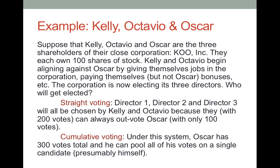If it's a close corporation — and this is not true of large publicly traded corporations — many states, including California, allow but do not require the bylaws to permit cumulative voting, with the idea of protecting minority shareholders like Oscar. Under cumulative voting, Oscar has a total of 300 votes because there are three positions: 100 votes times three positions equals 300. You get the same thing with Kelly and Octavio — they each have 300 votes. They don't have to split them across three different positions; they can pool them all on one. This allows Oscar, instead of dribbling out his 100 votes across three positions, to put all of his votes on one position, and this is what protects his minority status.